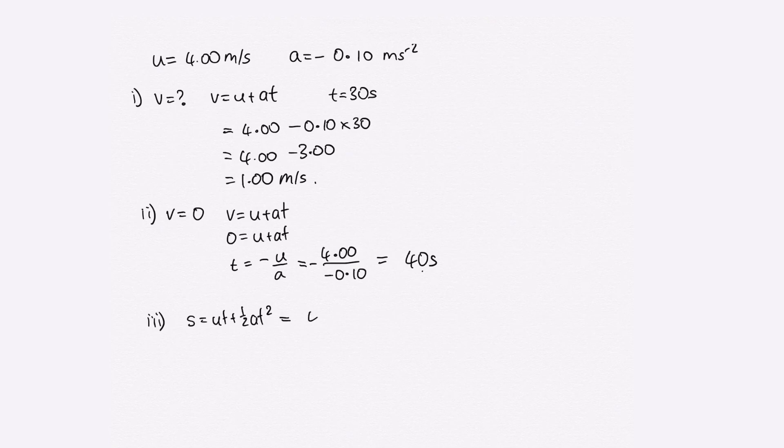So u, that's 4 times 40, plus a half times a, which is minus 0.10, times t squared, which is 40 squared. When we solve that on the calculator, we end up with 80 meters. So Anna travels 80 meters before coming to rest.